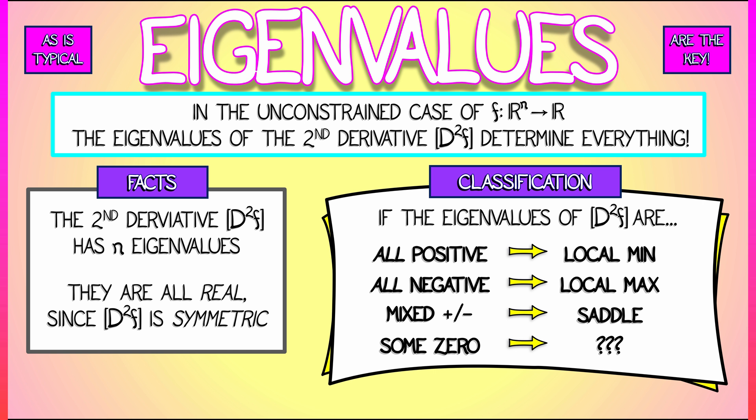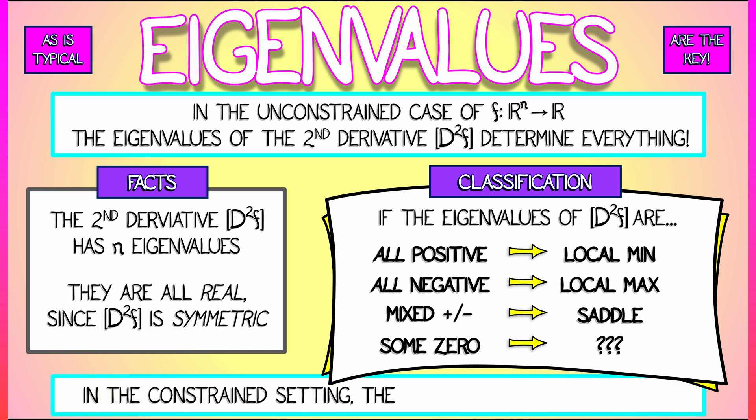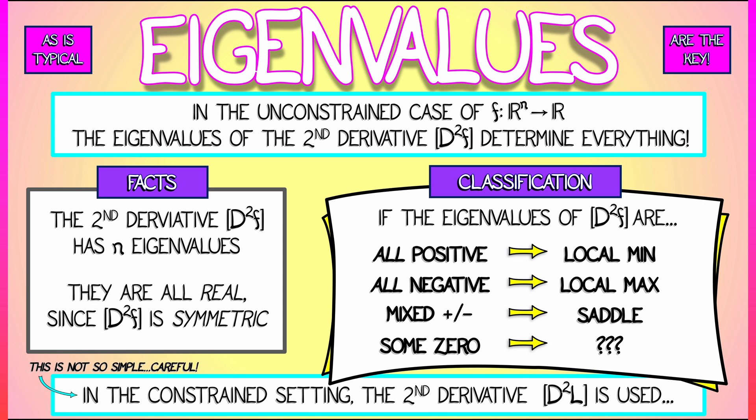That's the unconstrained case. What about the constrained setting? Here you use, not surprisingly, the eigenvalues of the Hessian of L, the Lagrangian. But it's not so simple — you have to be a little bit careful, and I'm afraid there isn't enough time to explain all the technicalities.